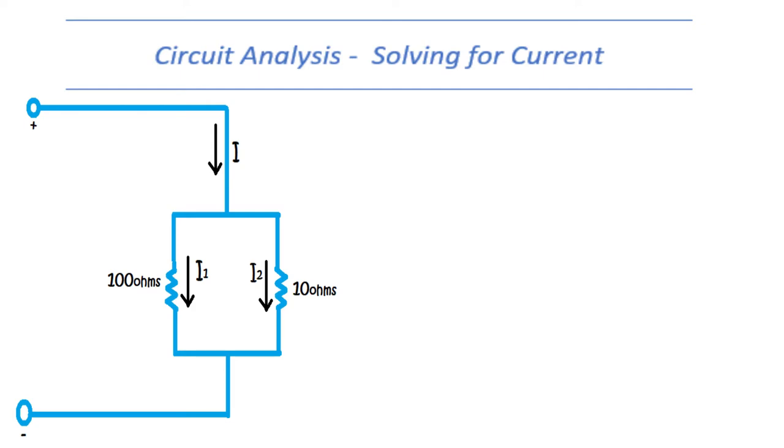Now knowing that the higher the resistance the less current will flow we can apply the current divider formula. Where the current through resistor 1 is equal to the product of the total of the current and the total resistance divided by the value of the resistance for resistor 1.